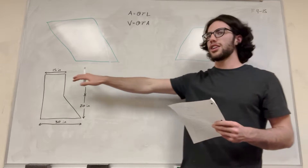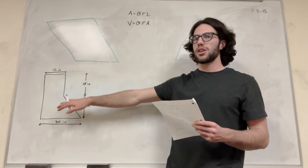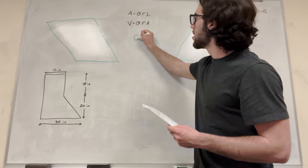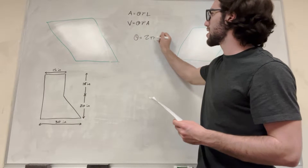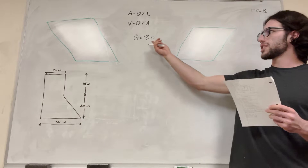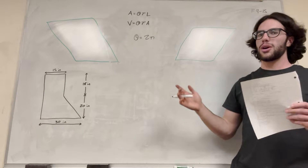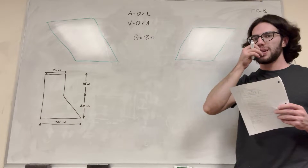I went ahead and drew the flat image of this shape, and we know that we're going to rotate it — theta is equal to 2π, because that's a full rotation around the axis. So that's the rotation we're going to use, and we just need to go ahead and use these equations to find out.